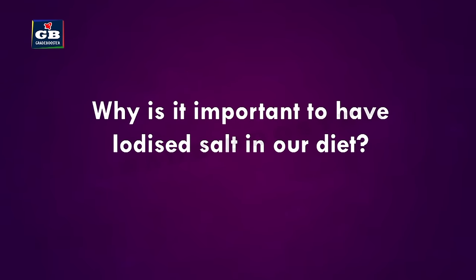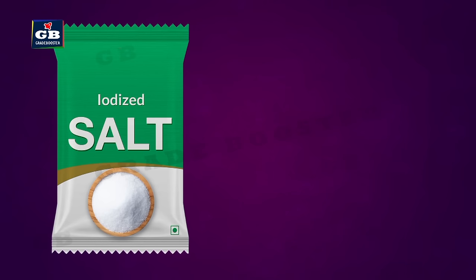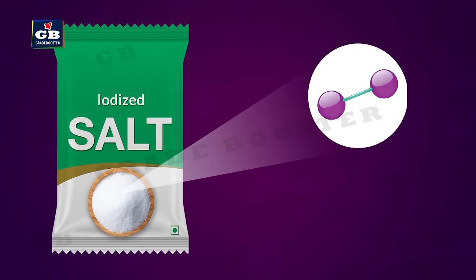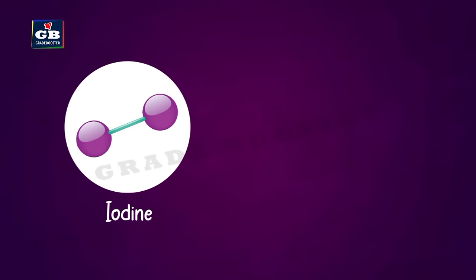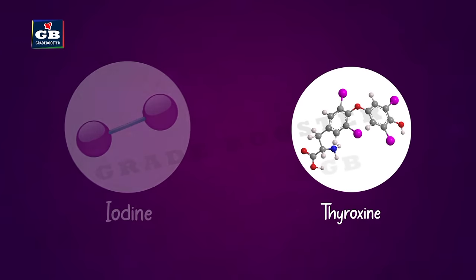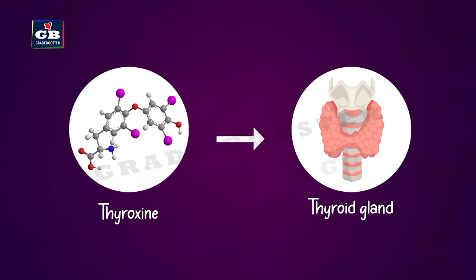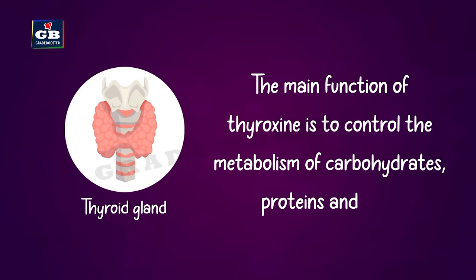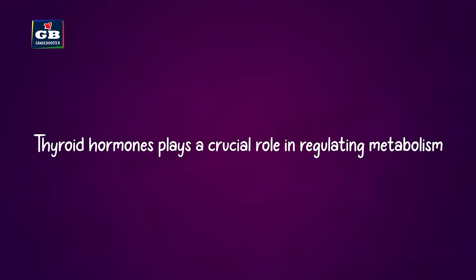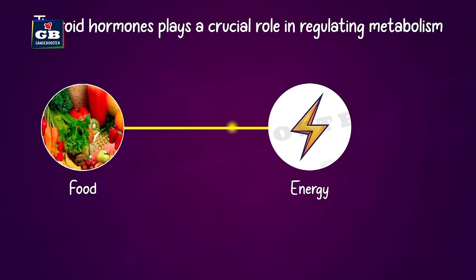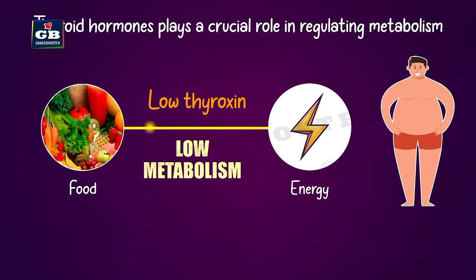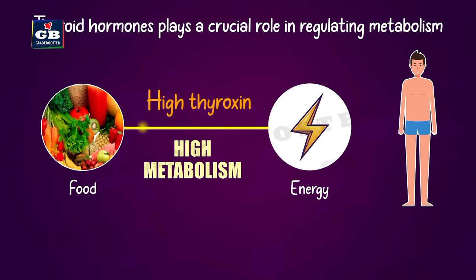It is advised to consume iodized salt because iodine is an important mineral required by the body. Iodine is essential for making thyroxin, a hormone produced by the thyroid gland at the neck. The main function of thyroxin is to control the metabolism of carbohydrates, proteins, and fats. An underactive thyroid slows down metabolism, leading to weight gain and fatigue, while an overactive thyroid speeds up metabolism, causing weight loss and other symptoms.